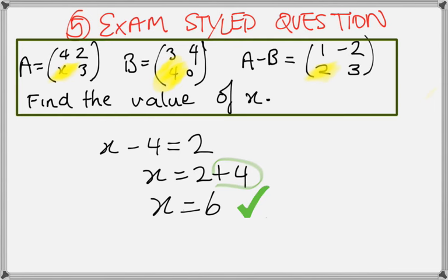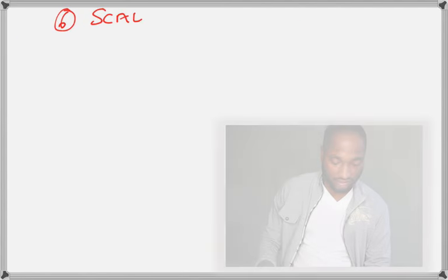Second row, first column, the answer, that is negative 2. Second row, first column, and we just solve it algebraically here. x minus 4, since a minus b is equal to this matrix, therefore, x minus 4 is equal to negative 2. Right? And from that, we can easily see x is 6, so we can just use our beautiful algebraic skills to solve that there.